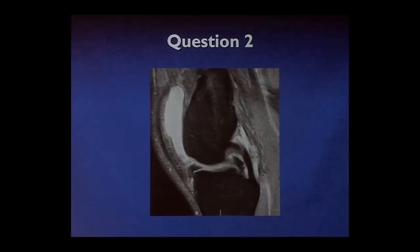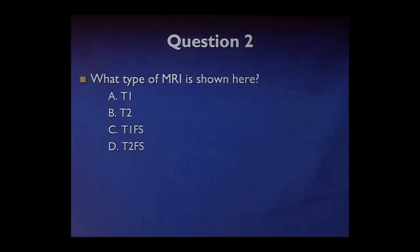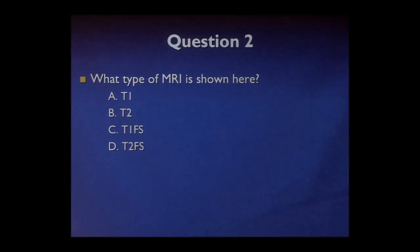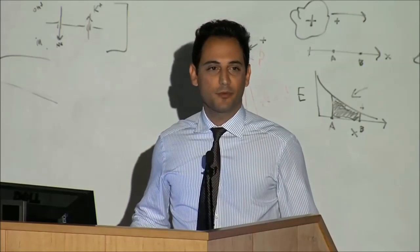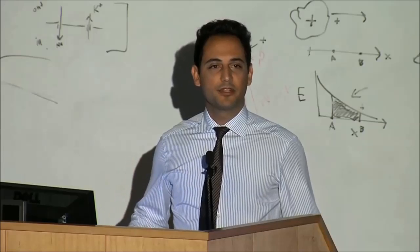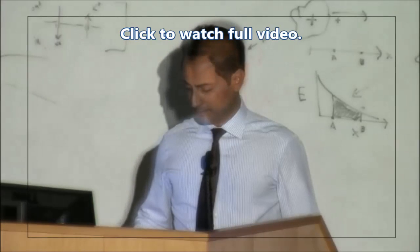Second question — again an MRI, again of the knee. You can see the appearance of this image is quite different. The question in this case is: what type of MRI is being shown here? A T1, a T2, a T1 with fat suppression, or a T2 with fat suppression. While at first some of these terms may be foreign, by the end of this lecture my hope is that you'll really be able to answer these quite confidently.